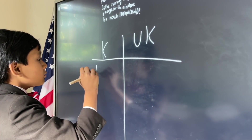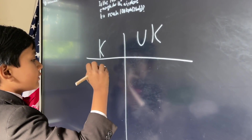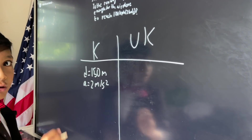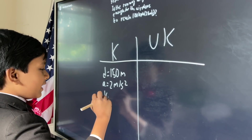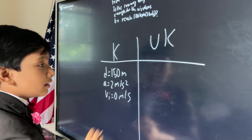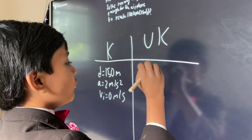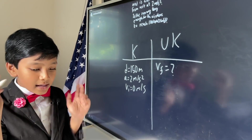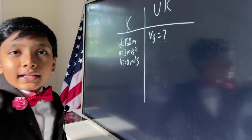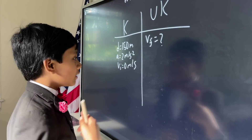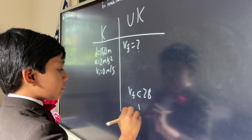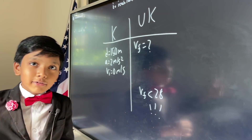We know that the distance of the runway is 150 meters, the acceleration is 2 meters per second squared from rest, and the initial velocity is zero — that's not really important. What we want to find is the final velocity, and whether it is sufficient to reach 28 meters per second. If the final velocity is less than 28, there's a problem with the runway.